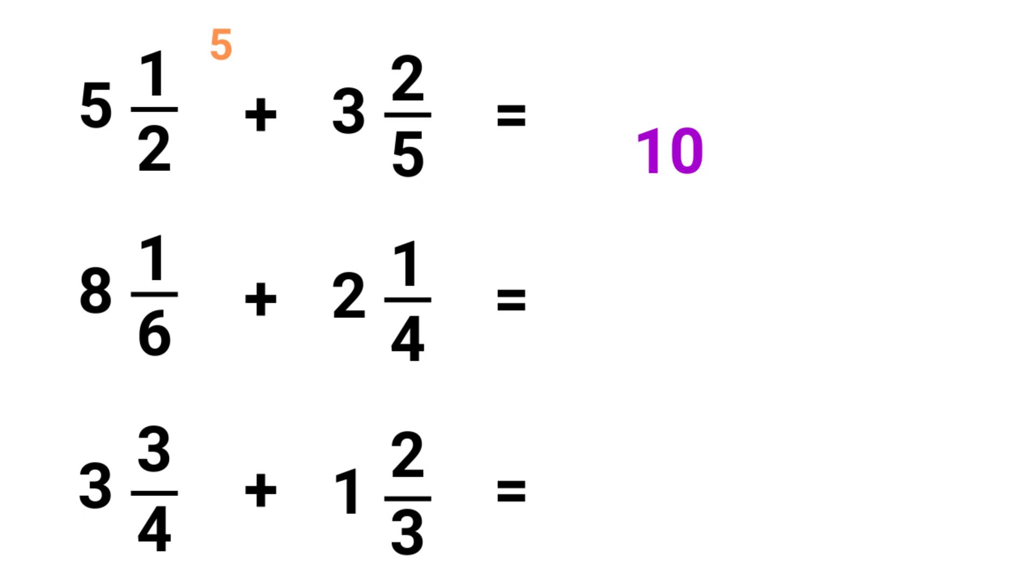We add those together, so 4 plus 5 equals 9. Finally, 5 plus 3 equals 8. So the first answer is 8 9/10.